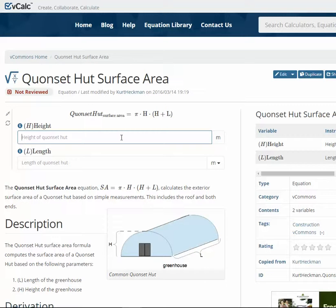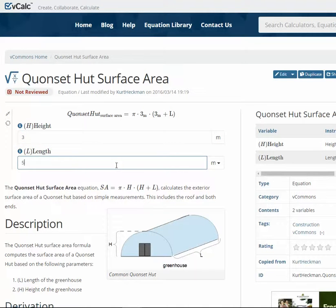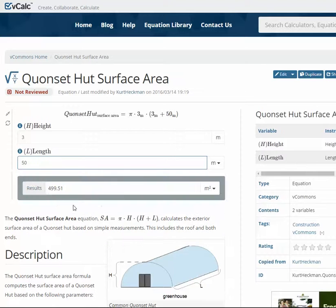Let's say this Quonset hut is 3 meters high and 50 meters long. It will then compute and tell you that the surface area is 499.51 square meters.